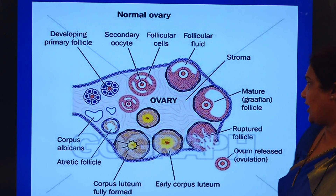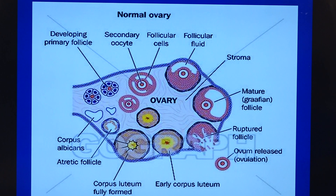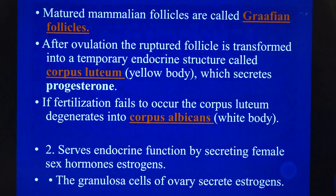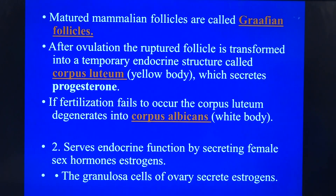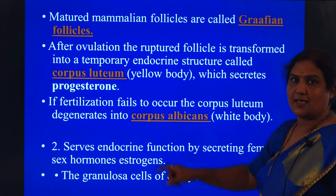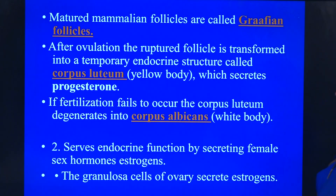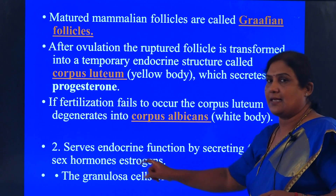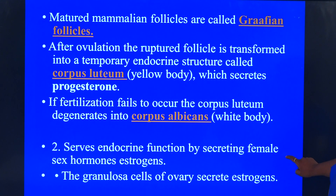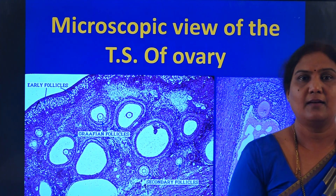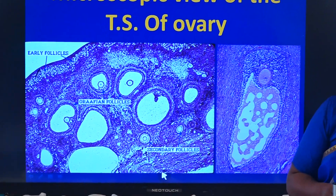The degenerated corpus luteum becomes white and is called corpus luteum albicans, and this degenerating process is called atresia. The matured mammalian follicles are called Graafian follicles. The corpus luteum acts as an endocrine gland releasing progesterone. Apart from this, the follicular cells also help in releasing the female sex hormone estrogen.